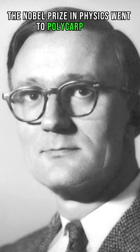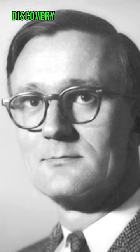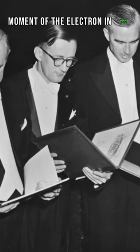The Nobel Prize in Physics went to Polycarp Cush for his groundbreaking discovery of the anomalous magnetic moment of the electron in 1955.